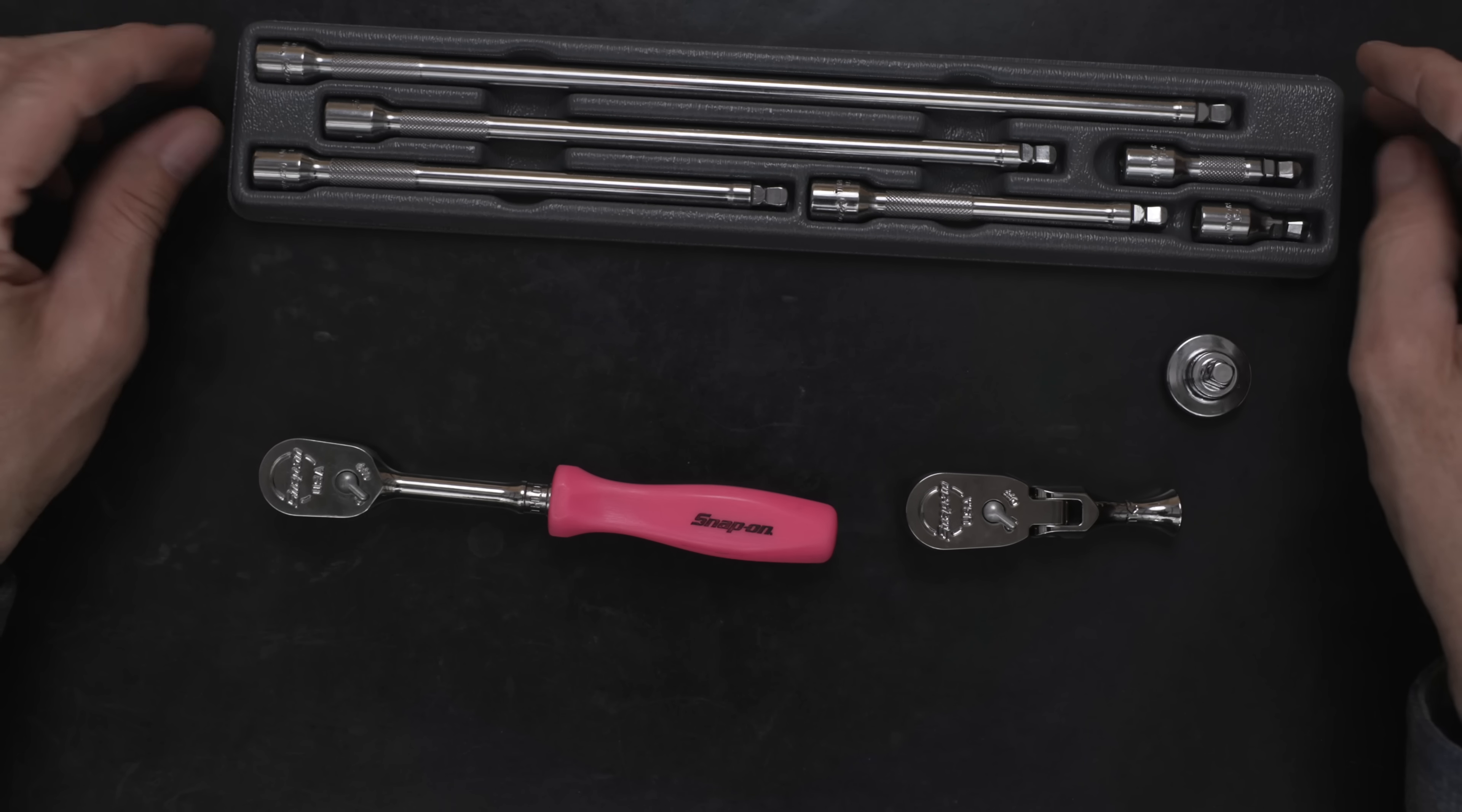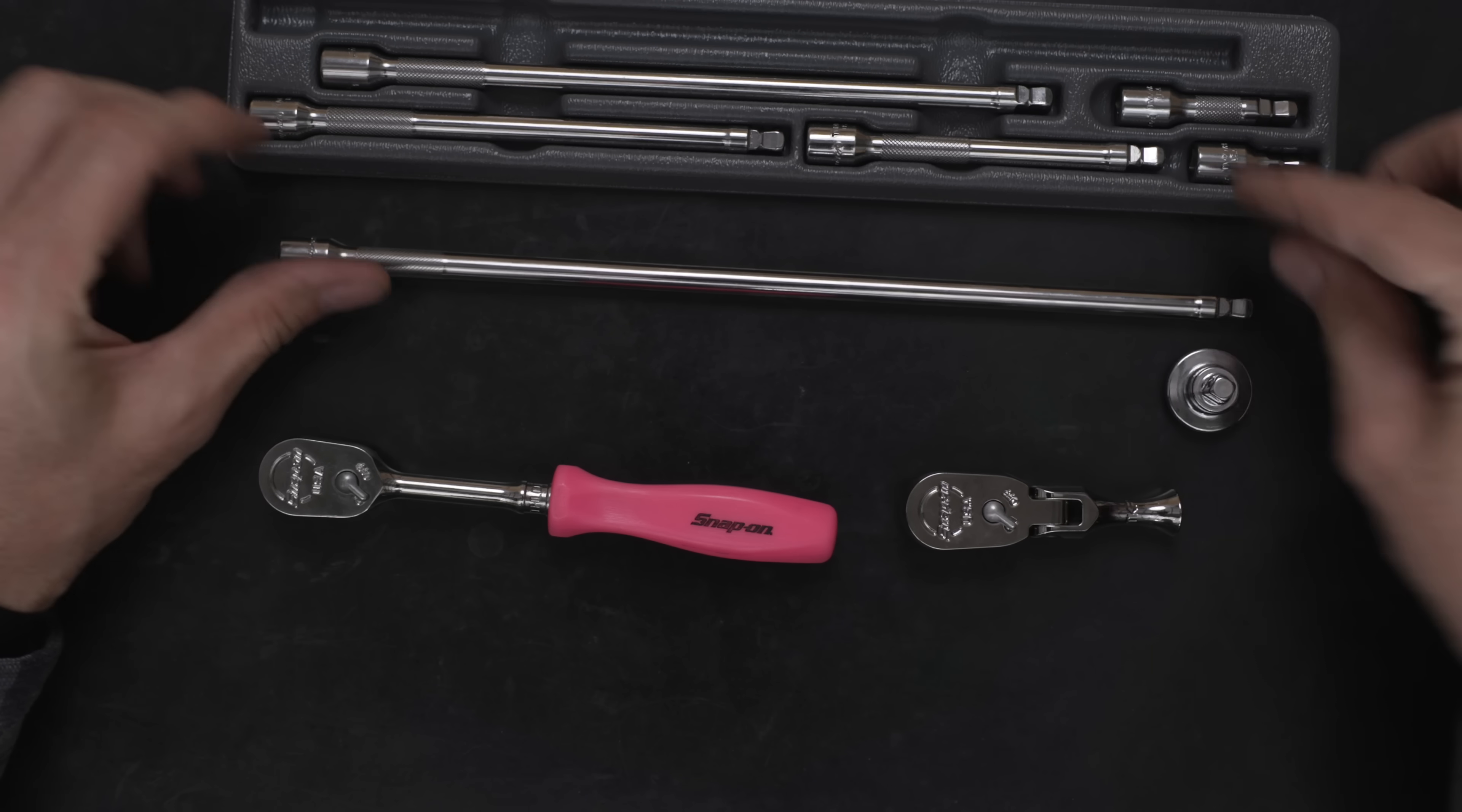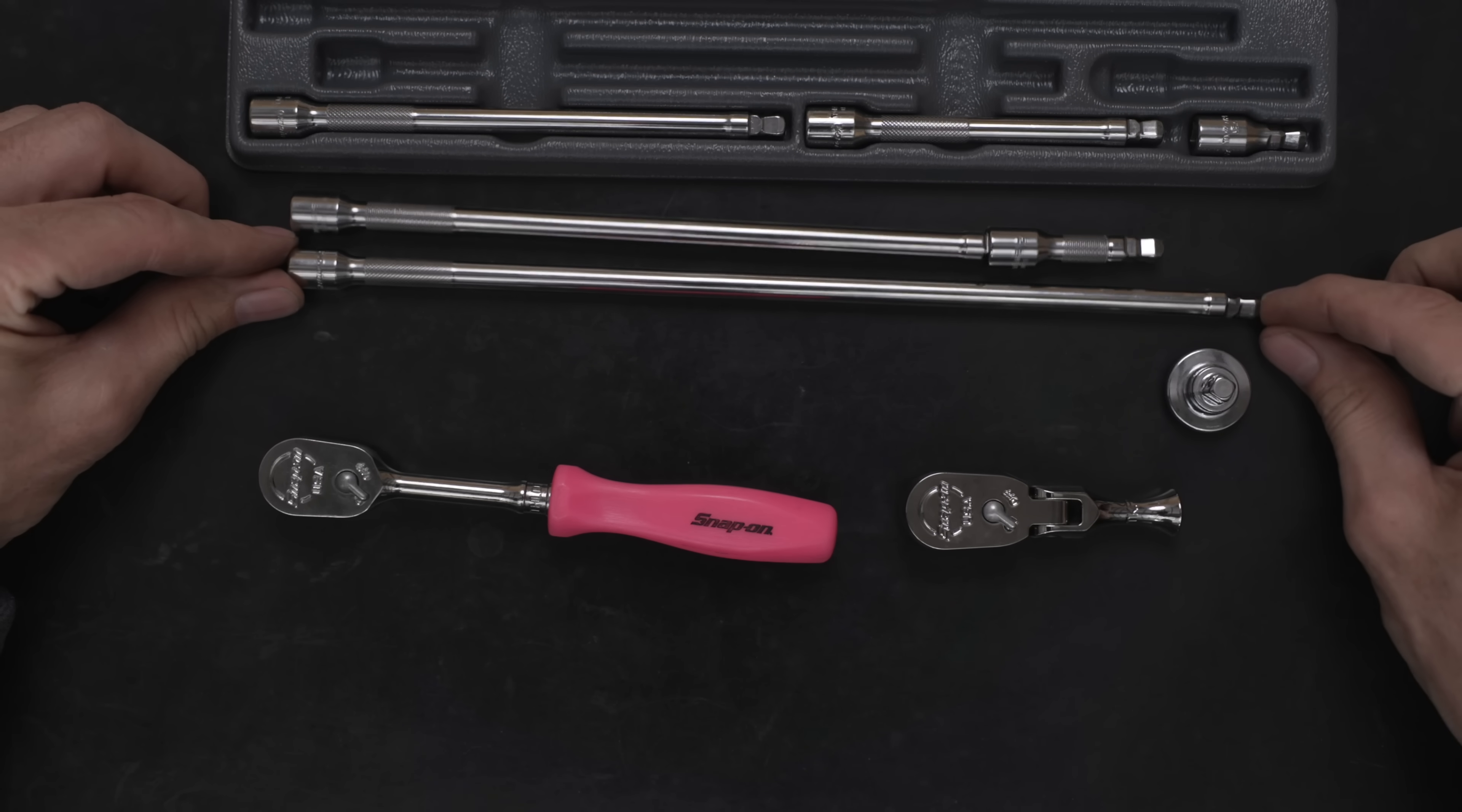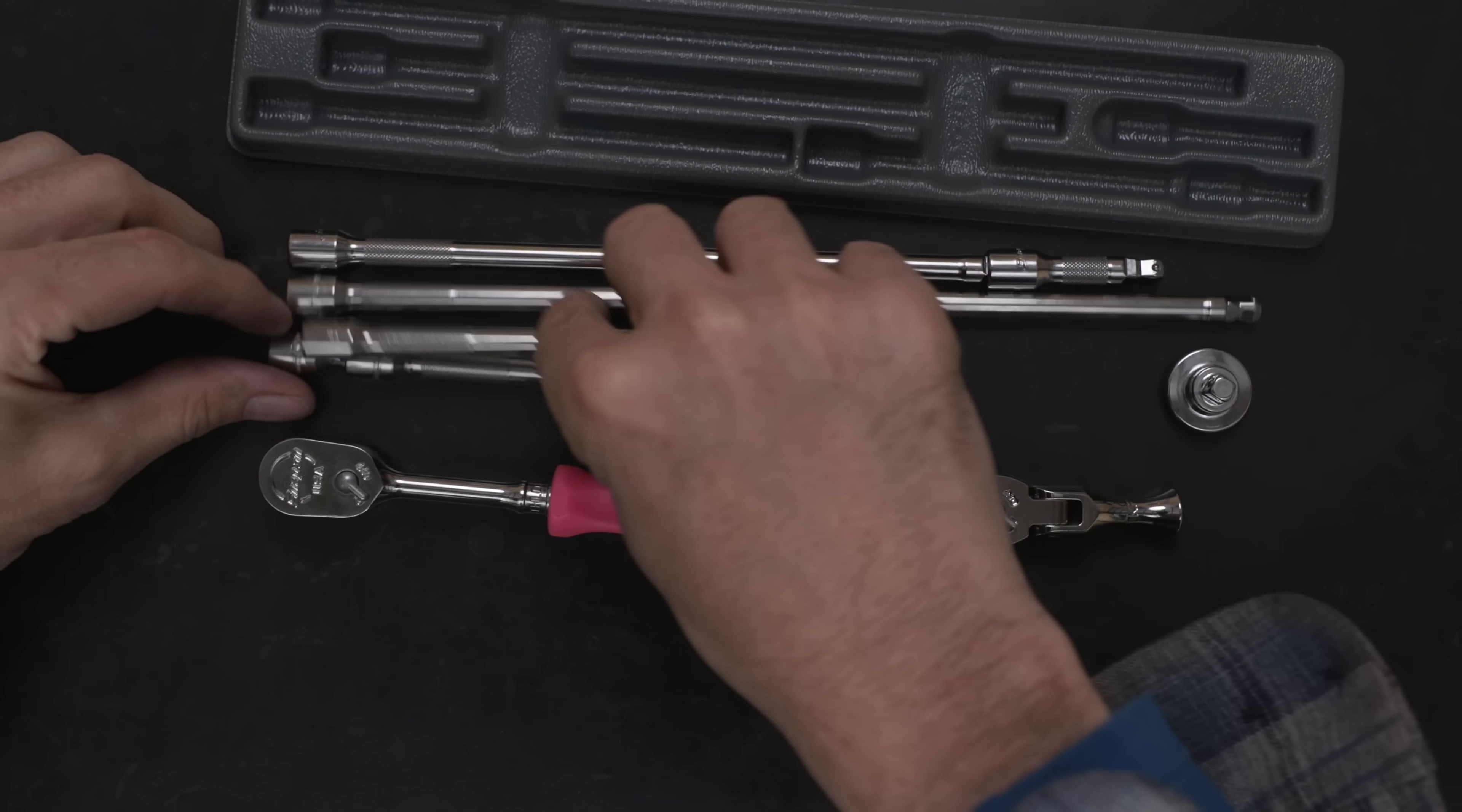Take the extensions, for example. This is a full set of quarter-inch drive extensions. And one thing that maybe you guys won't notice is sometimes you get one where this one's too long and this one's too short, and you just need something in between. What Snap-on does is any combination of extensions that you put together will never equal the same length as one of the individuals. So no matter what combination you put together, they will never equal the same length as one of the existing.